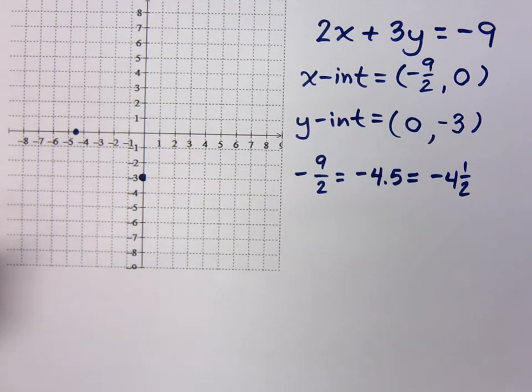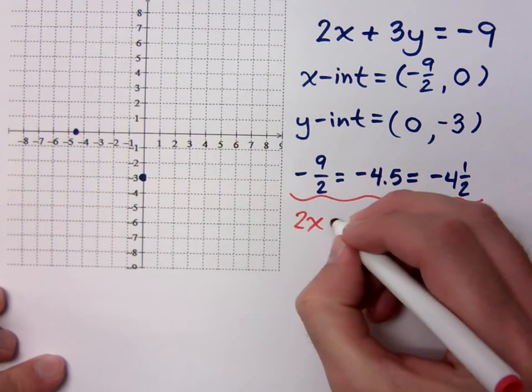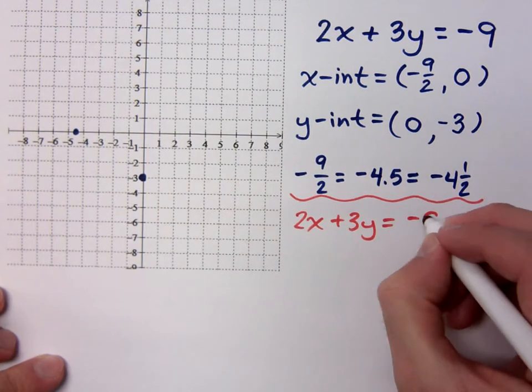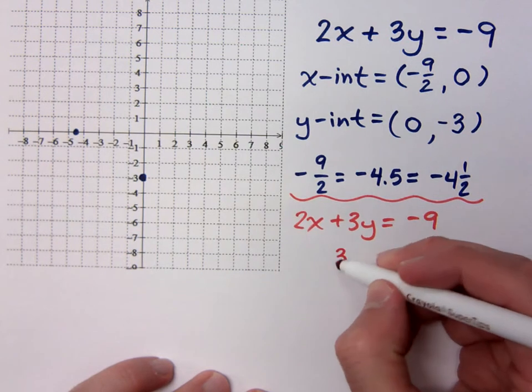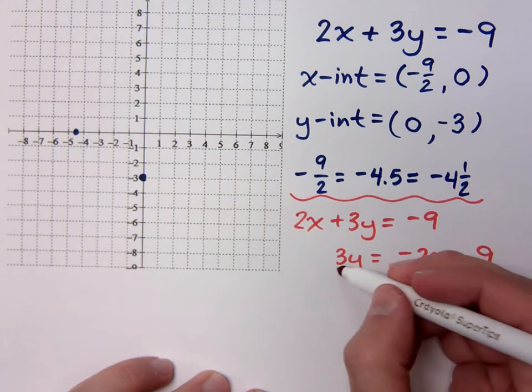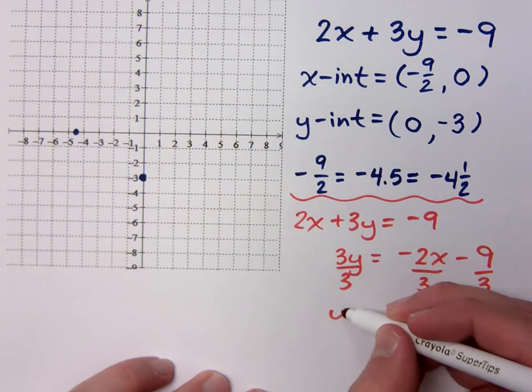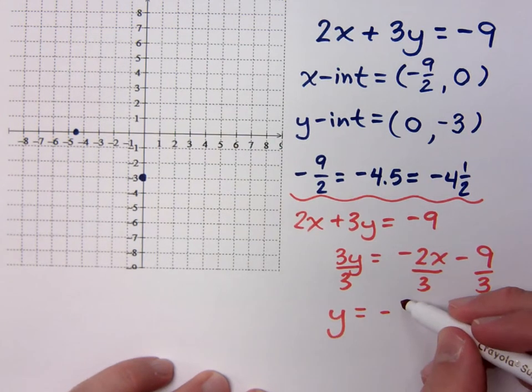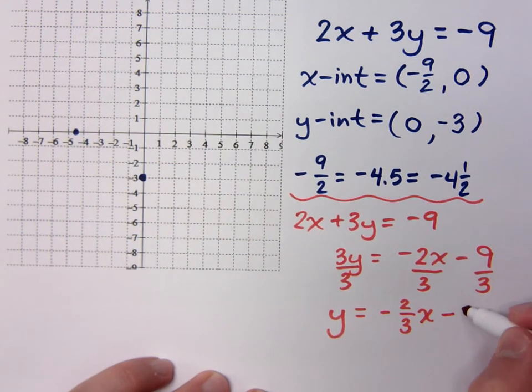Now, what could also be helpful to us is to solve this guy for y, so I can identify my slope and get more points rather easily. So if I take this guy right here, 2x plus 3y equals negative 9. How do I solve this for y so I can identify my slope? I'm going to subtract 2x to the other side, and then divide everything by 3. So y equals negative 2 thirds x minus 3.